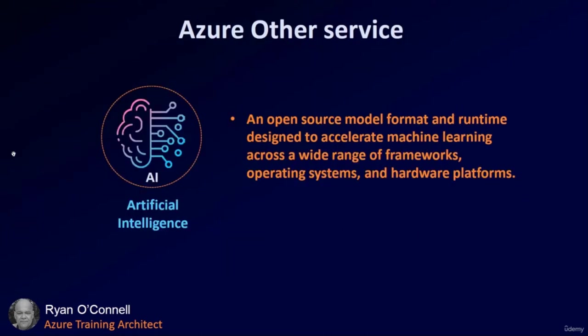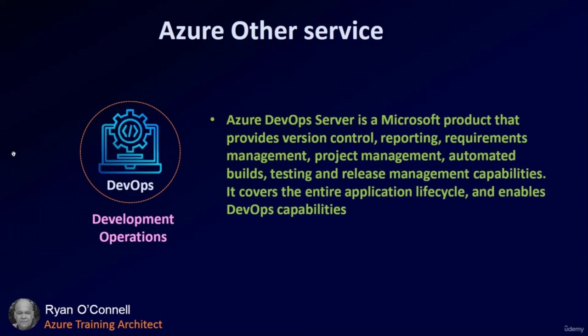Some other Azure services worth mentioning include artificial intelligence — an open source model format and runtime designed to accelerate machine learning across a wide range of frameworks, operating systems, and hardware platforms. And of course, DevOps: Microsoft's product that provides version control, reporting, requirements management, project management, automated builds, testing, and release management capabilities, covering the entire application lifecycle.